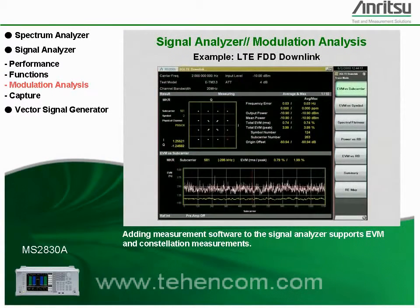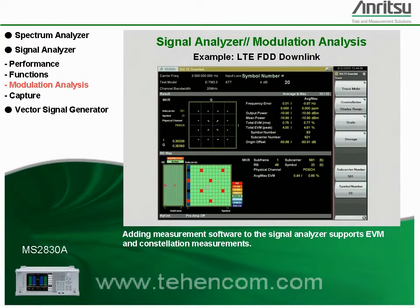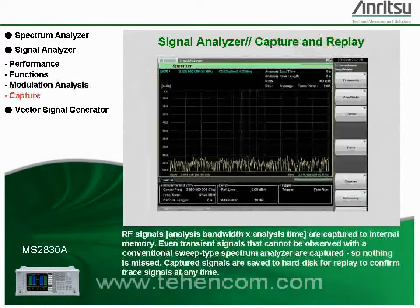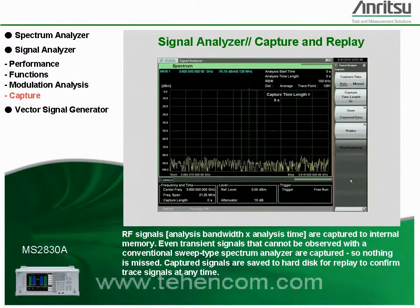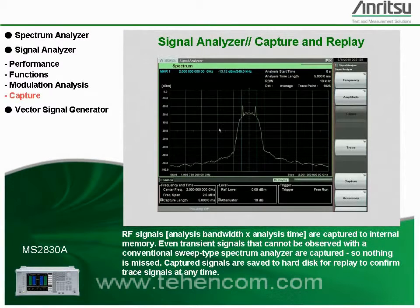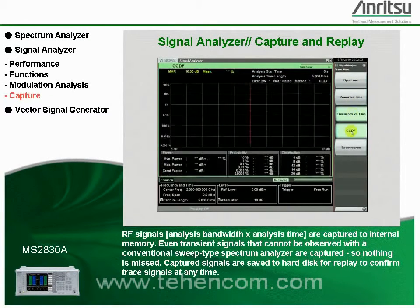Adding measurement software to the signal analyzer supports EVM and constellation measurements. The MS2830A supports all major wireless communication systems, and installing each software license supports modulation analysis. RF signals are captured to internal memory. Even transient signals that cannot be observed with a conventional sweep-type spectrum analyzer are captured, so nothing is missed.